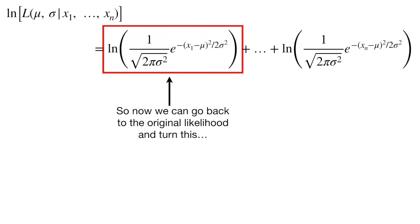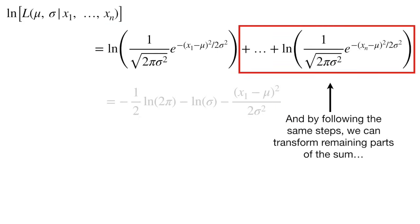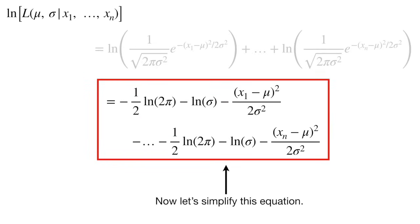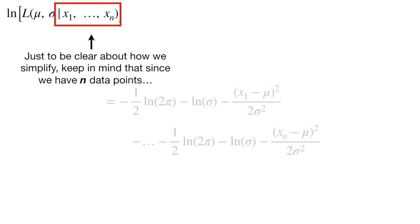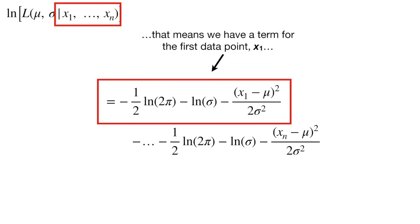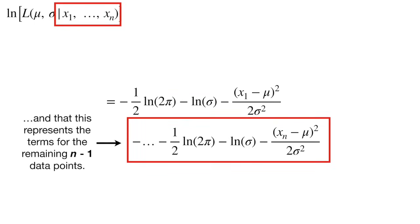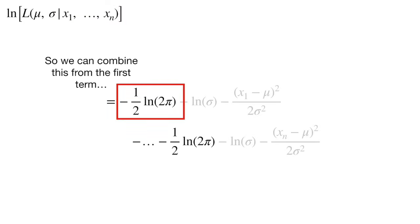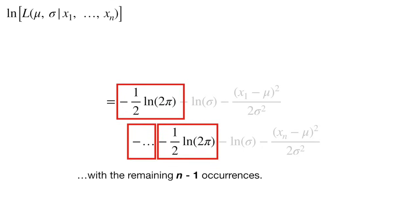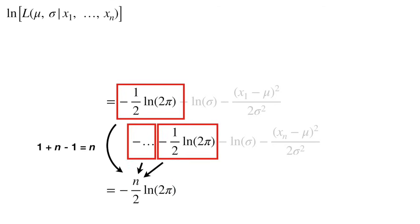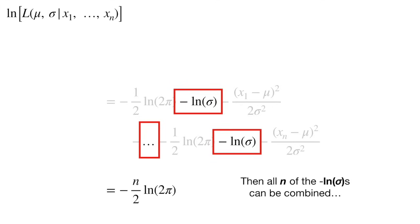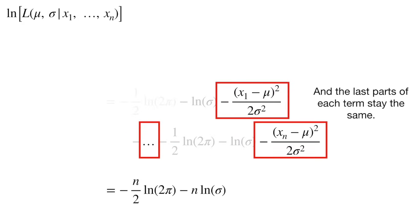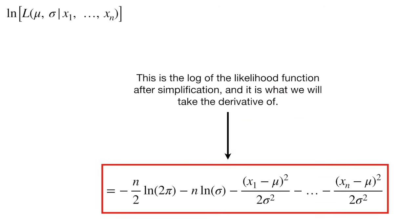So now we can go back to the original likelihood and turn the product form into the log-transformed sum. By following the same steps, we can transform the remaining parts of the sum. Now let's simplify this equation. Since we have n data points, we have a term for x sub 1 and terms for the remaining n minus 1 data points. We combine them: 1 plus (n minus 1) equals n, so all n of the negative log-of-sigma terms combine, and the remaining parts stay the same. This is the simplified log likelihood function that we will take the derivative of.